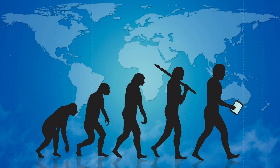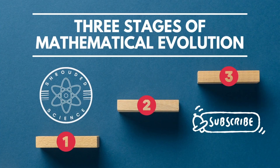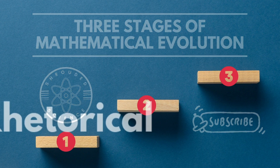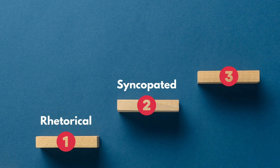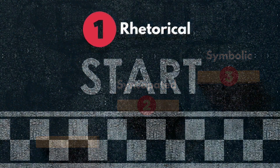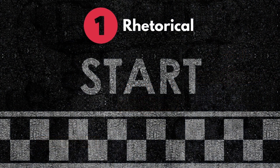This development occurred across three distinct stages: the rhetorical, syncopated, and symbolic stages. Let's start at the beginning with the first stage — the rhetorical stage.